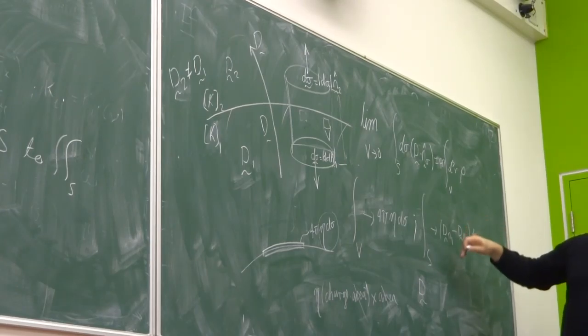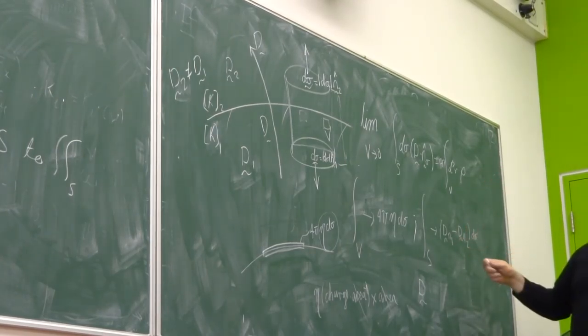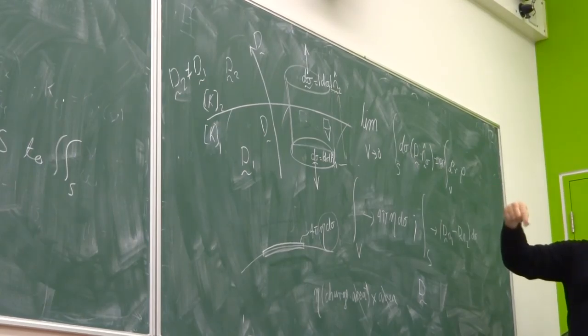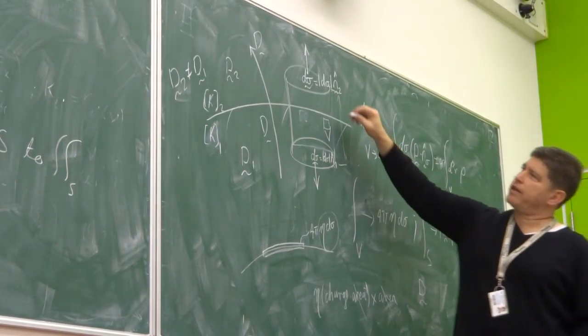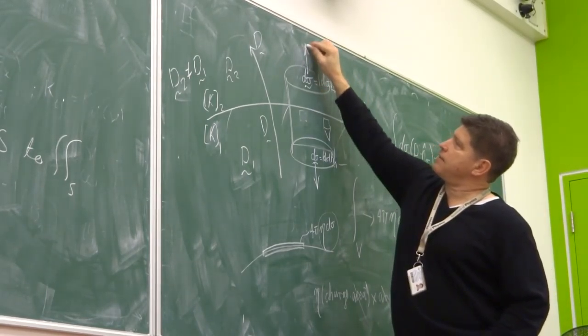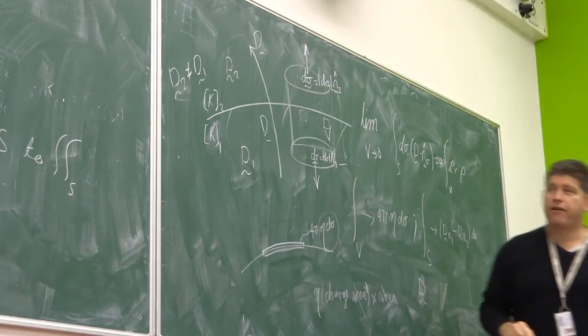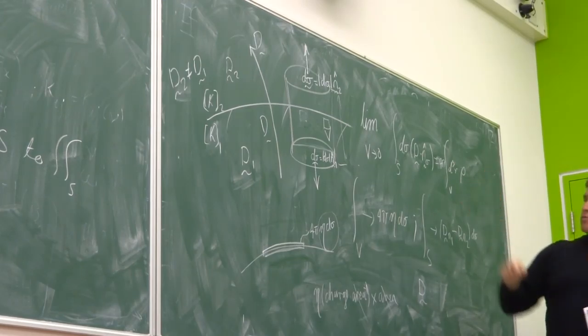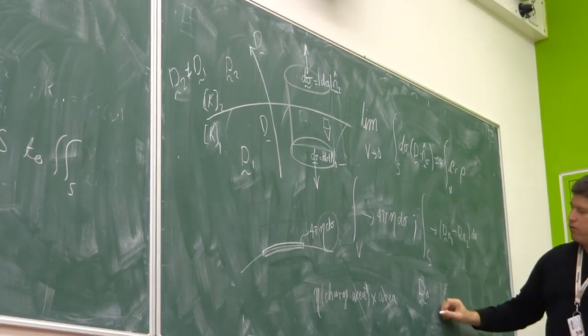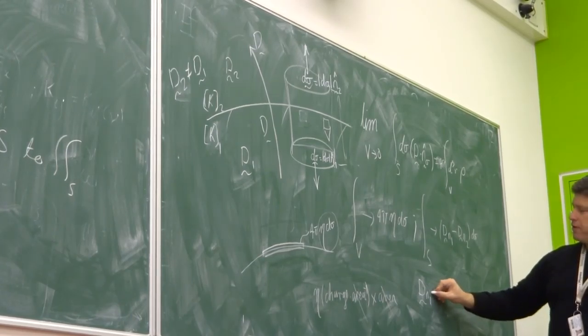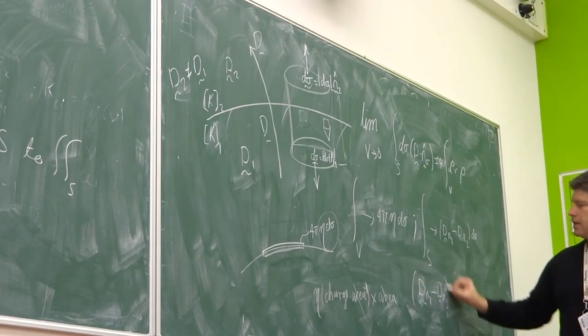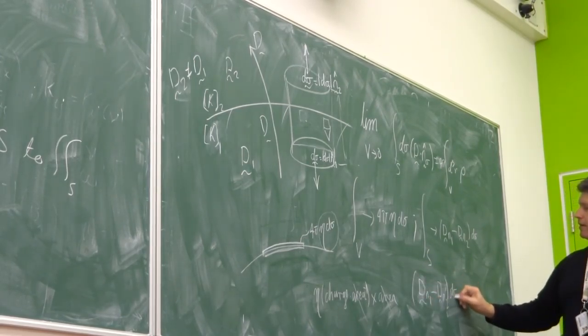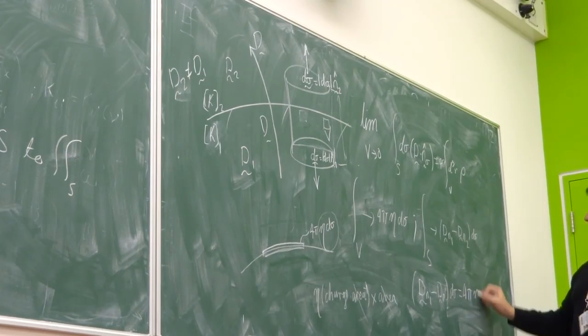So when you do the surface integral, you're left with only the components from the ends of the cylinder. And you're looking at the component of D that's in the direction that that area faces, and likewise with the other areas. That's why we've got this normal from the first and then the normal from the second.